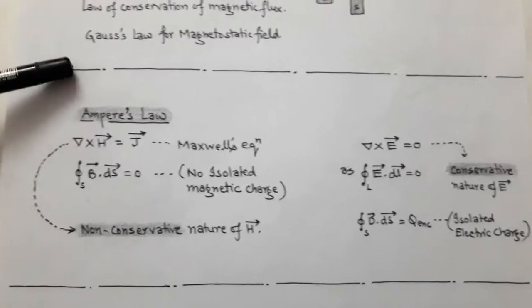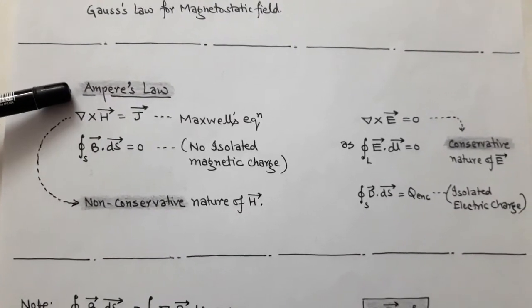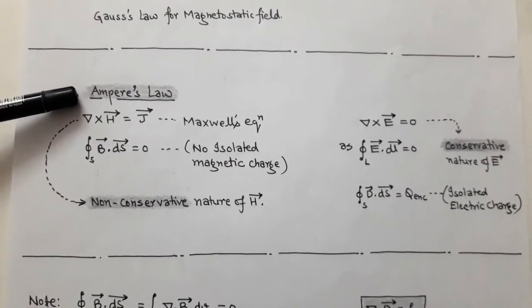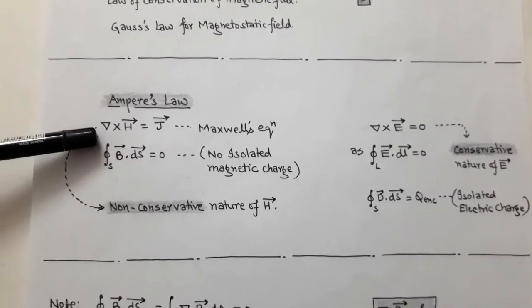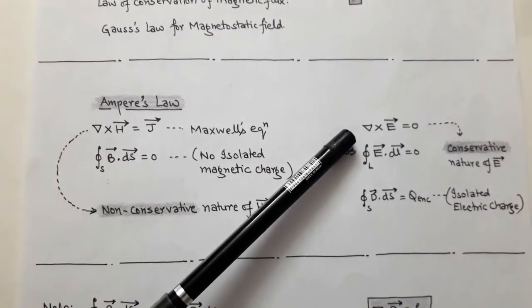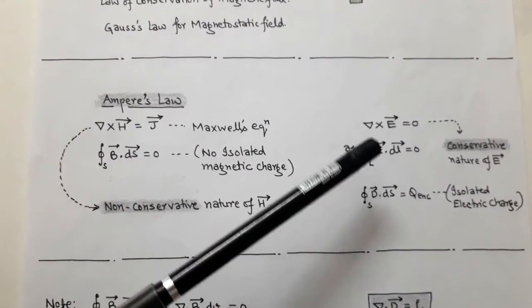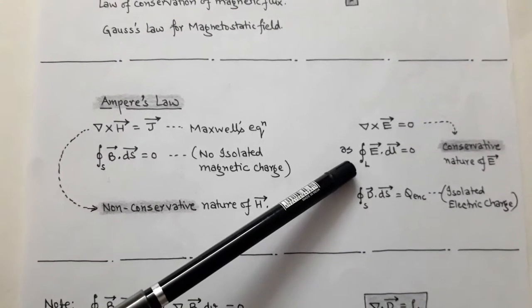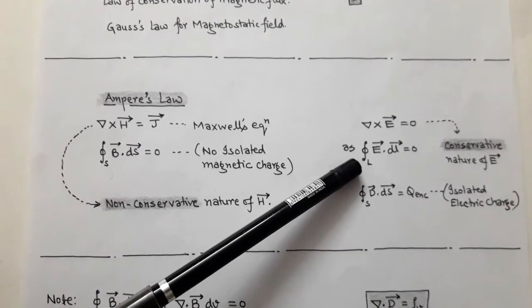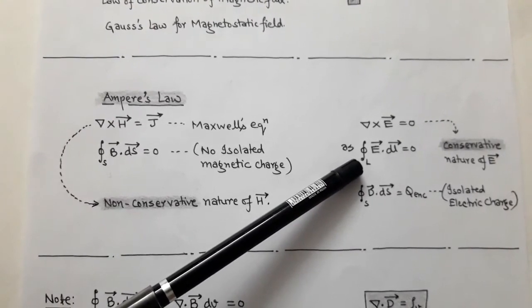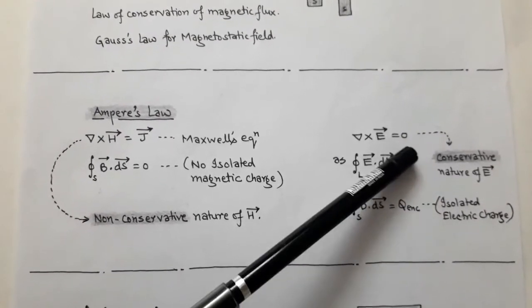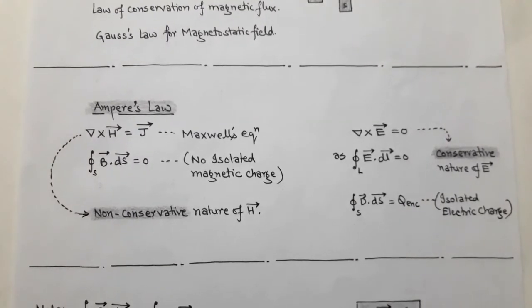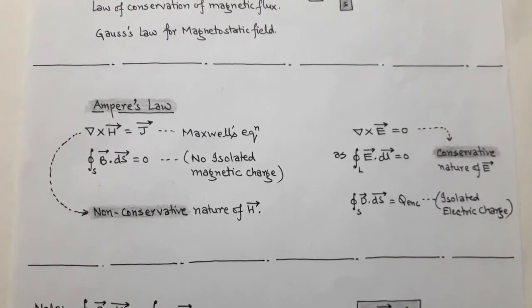In magnetostatics, there is Ampere's law, which gives a Maxwell's equation: curl of H equals J vector, where J is called the current density. In the case of electrostatics, the curl of E equals 0. This happens because, as we move around a closed path, the dot product of E and dl equals 0, which means curl E = 0. This shows the conservative nature of the electric field intensity E.